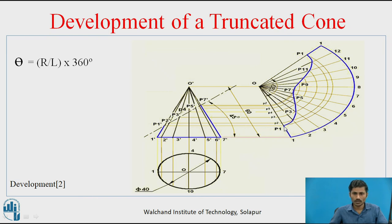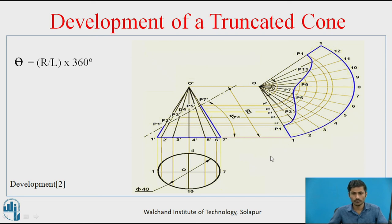After transferring all points, connect all points P1 to P12 with a smooth curve, because the external surface of the cone is curved. Once cut with the cutting plane, we get a curved profile, not a straight edge. Join these points with a dark line — this surface shown in blue indicates the development of the lateral surface of the cone.